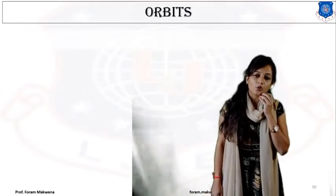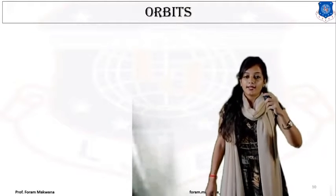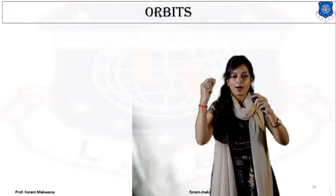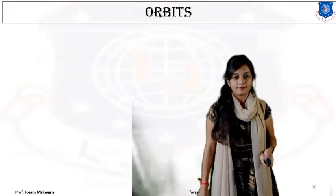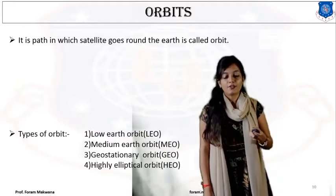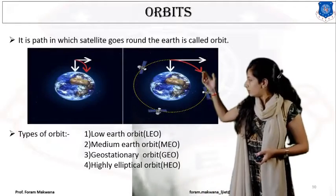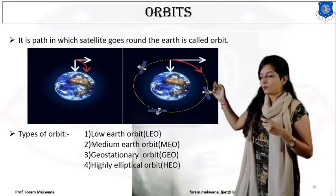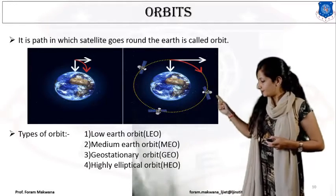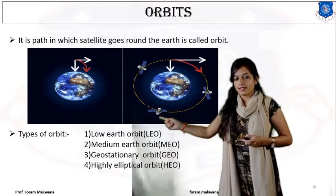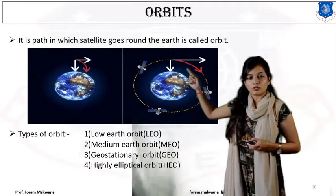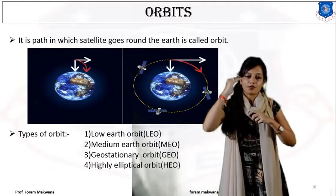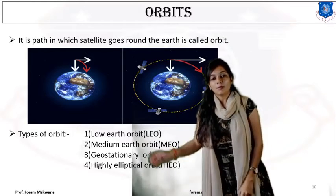Now, what is an orbit? A satellite is moving around the Earth in a specific path. That specific path is known as the orbit. Technically, the definition of orbit is: it is the path in which a satellite goes around the Earth. Based on the distance from the surface of the Earth, the orbit is classified.